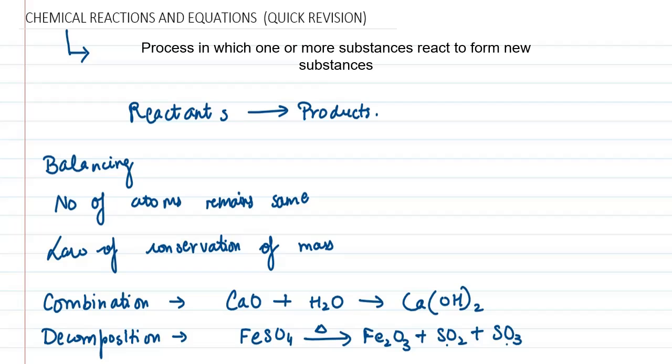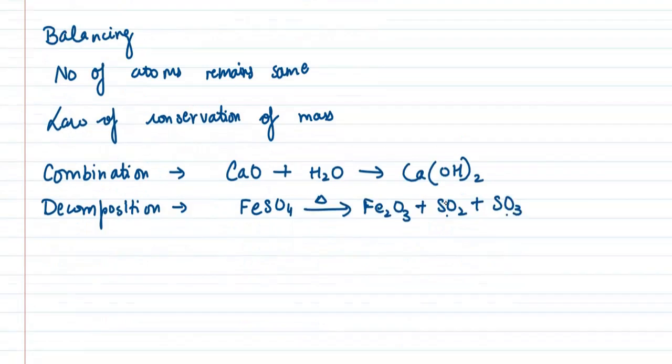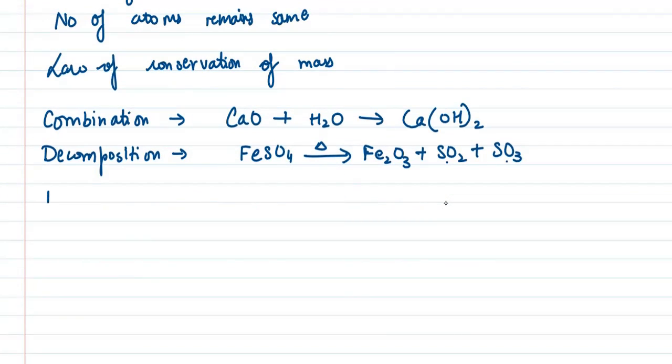Now we have displacement reaction. In displacement reaction, one element displaces another. Let's say copper sulfate when reacts with Fe, it will give us FeSO4. Here Fe has overcome copper so that it can be FeSO4 and copper as well. One atom can be replaced by other if it is more reactive than the copper.